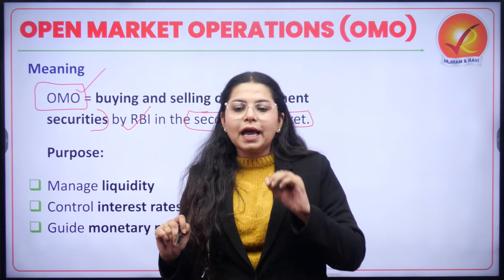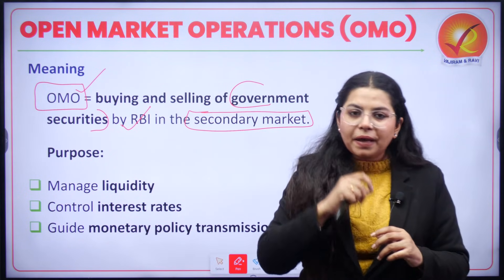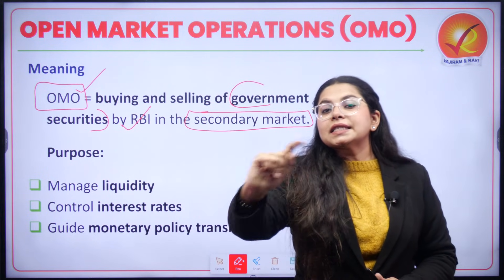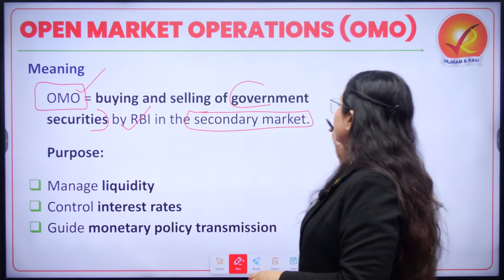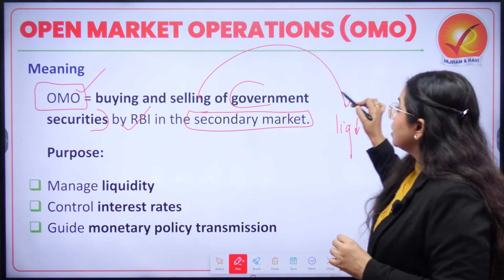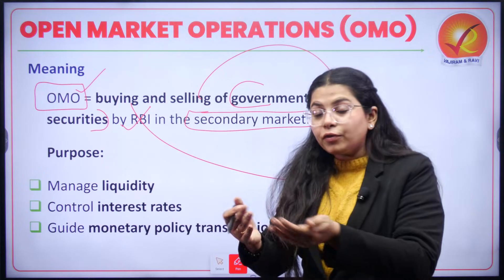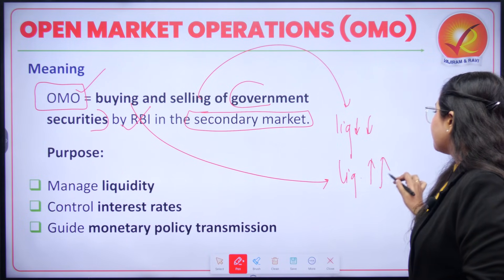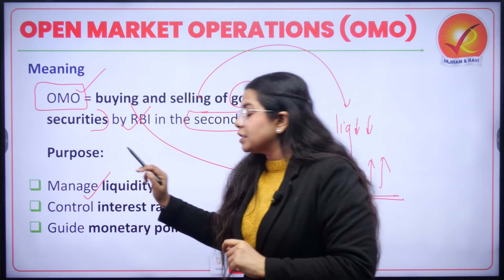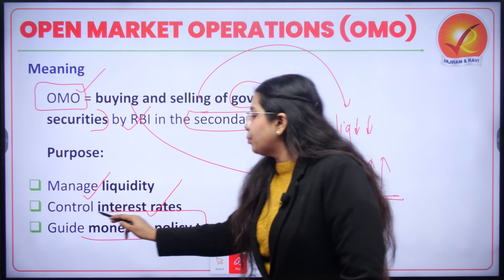When RBI is selling a government security, you pay some amount and RBI gives that security to you — meaning when RBI is selling securities, it is taking cash from the public, so liquidity decreases. But when RBI is buying securities, you have the security and RBI takes it from you, paying you for it — so in that scenario, liquidity increases. That is why open market operations are used as a tool by RBI to manage liquidity, control interest rates in the economy, and guide monetary policy transmission.